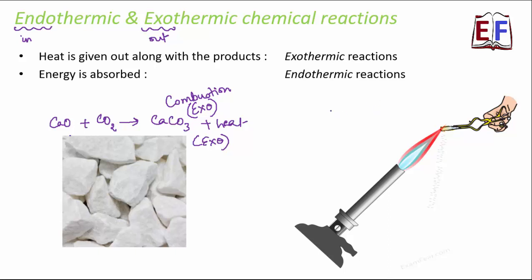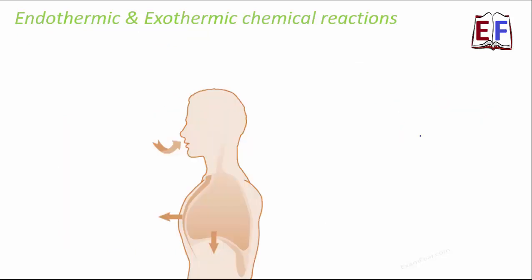Now what about endothermic reactions? Take this example: when magnesium combines with oxygen it forms magnesium oxide, but for this reaction to take place we need to provide heat. If you remember, we actually heat the magnesium ribbon. Heat is an input in this case, so this is an example of an endothermic reaction.